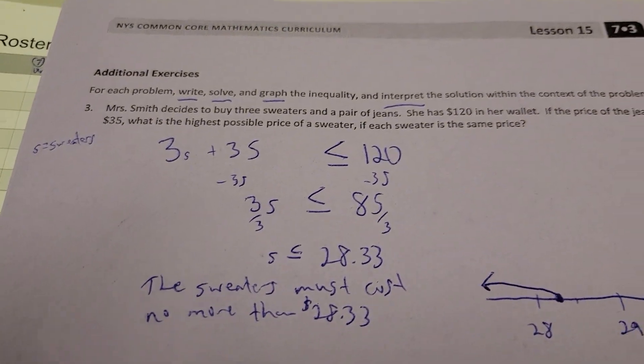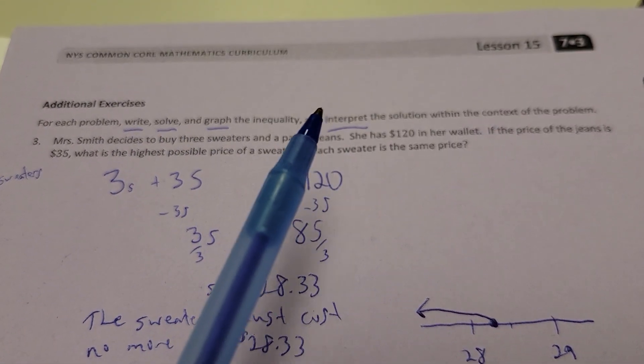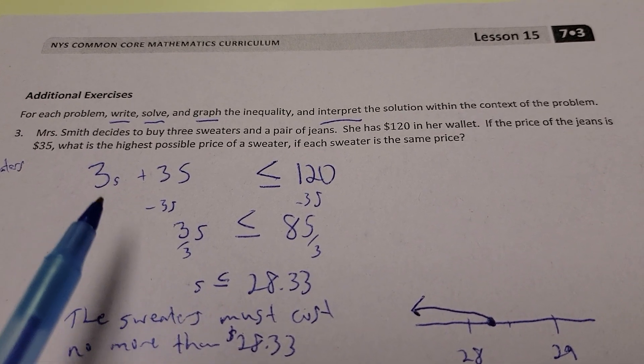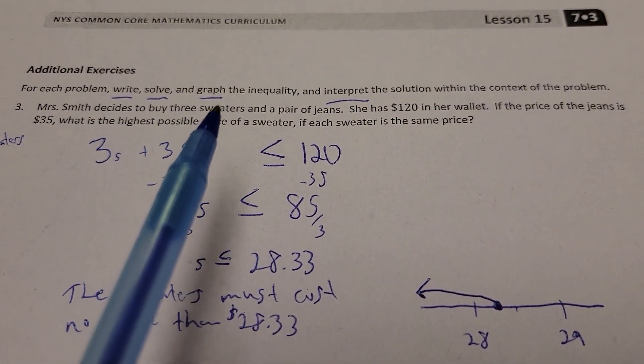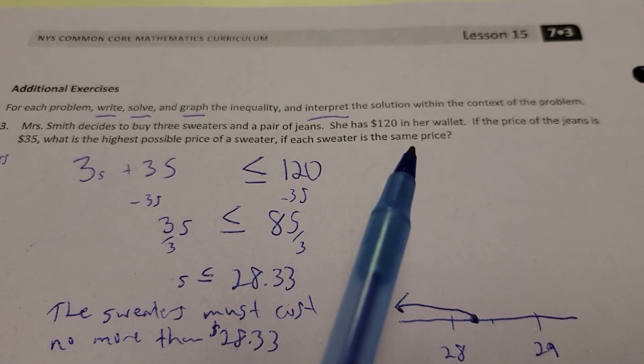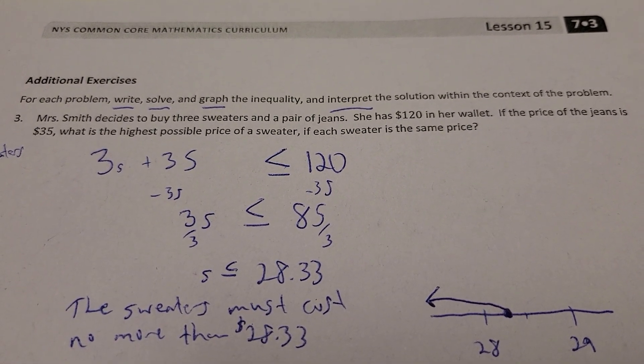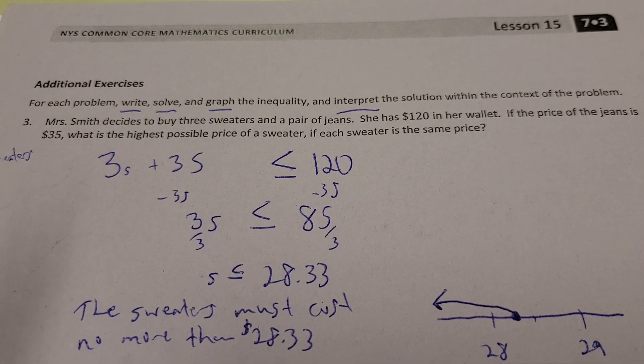Next up, we're going to kind of do the same thing here. Write, solve, graph the inequalities, interpret the solution, and so on. Mrs. Smith decides to buy three sweaters and a pair of jeans. She has $120 in her wallet. The price of the jeans is $35. What's the highest possible price of the sweater if each sweater is the same price?